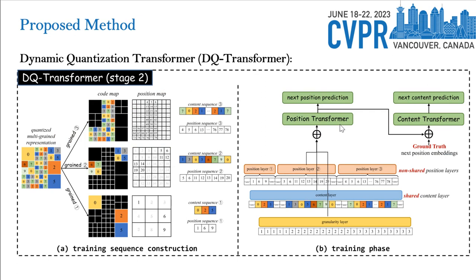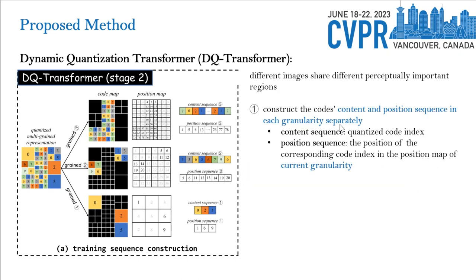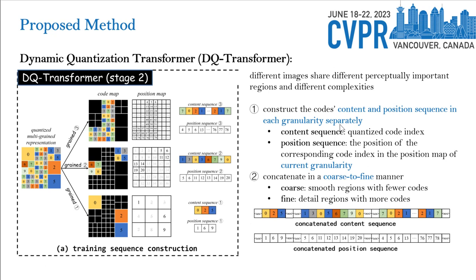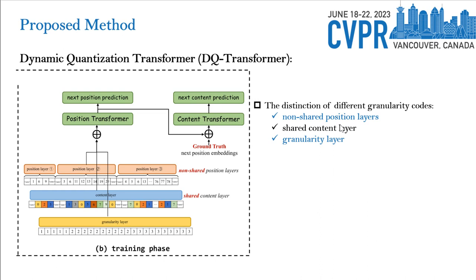Next, we introduce our second stage model, named Dynamic Quantization Transformer, or DQTransformer for short. Considering different images share different perceptual importance regions, DQTransformer first constructs the code content and position sequence in each granularity separately. Then it concatenates them in a coarse-to-fine manner to achieve coarse-to-fine autoregressive image generation. We further propose non-shared position layers for each granularity's position sequence, as well as a unique granularity embedding to distinguish different granularity codes.